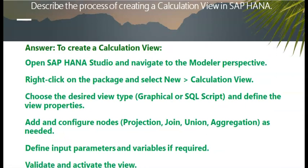Describe the process of creating a calculation view in SAP HANA. To create a calculation view: open SAP HANA Studio and navigate to the Modeler perspective; right-click on the package and select New Calculation View; choose the desired view type — Graphical or SQL Script — and define the view properties; add and configure nodes such as Projection, Join, Union, or Aggregation as needed; define input parameters and variables if required; then validate and activate the view.